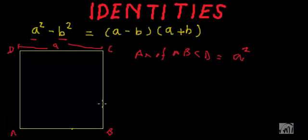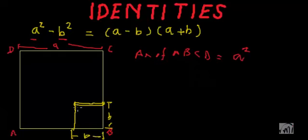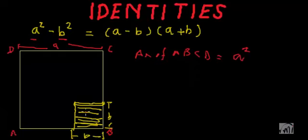Let this be length b — suppose this is b, and this is also b. So if we construct a square, it will be something like this. This is the square whose sides are b, so the area of this square will be b × b, that is b².